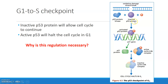DNA damage will lead to activated P53 and upregulation of the cyclin-dependent kinase inhibitor P21, which can bind to an active CDK complex and ultimately halt the cell cycle in G1. This regulation is very important because the next phase of the cell cycle is S, which is the synthesis phase where DNA is replicated. The cell does not want to replicate damaged or broken DNA, because then that damage will be perpetuated on to future generations of cells. This halting of the cell cycle in G1 — until the damage can either be repaired or the cell can be signaled into apoptosis or cell death — is very important so that DNA damage is not perpetuated through cell division.